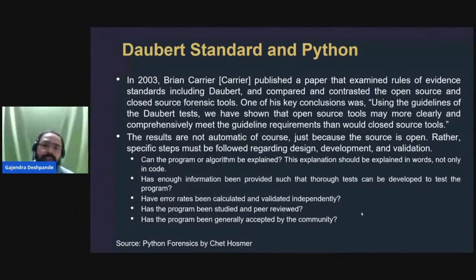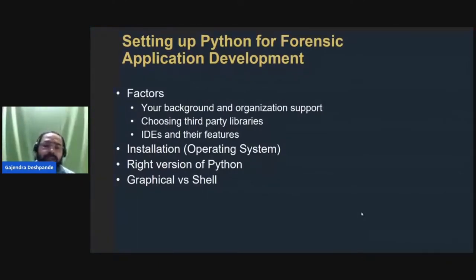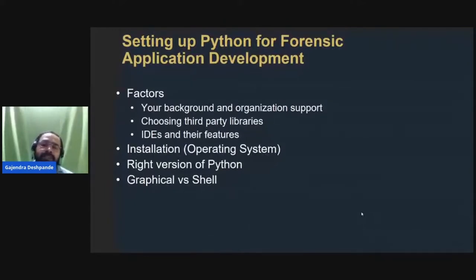You can refer to the book 'Python Forensics' by Chet Hosmer for more information. The next important topic is setting up Python for forensic application development. Key factors include your background and your organization's support for open source work. Choosing third-party libraries is important — some may be compatible with your present version of Python and some may not, requiring you to install multiple versions or use separate containerized installations.